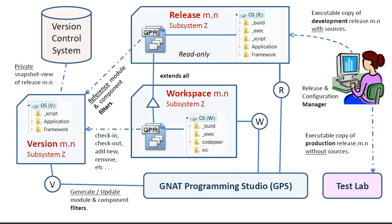If a unit in the release needs to be changed, then it must be transferred to the workspace, where it will reappear as a unit under version control and can therefore be checked out and modified. The GANAT project manager takes care of the transfer and visibility details. The various outputs produced by the compilation system appear in the workspace directories: build, excc, and code peer.